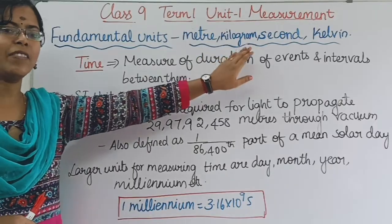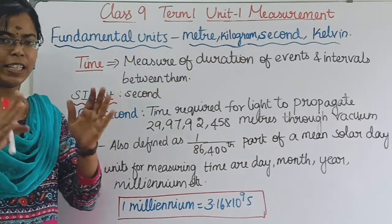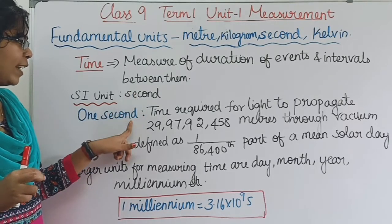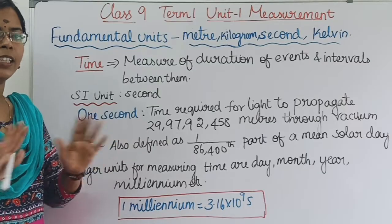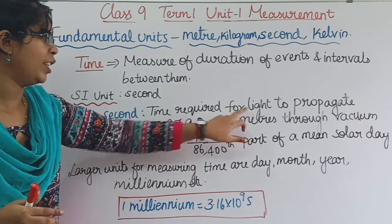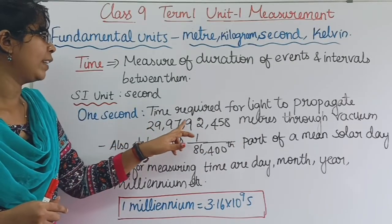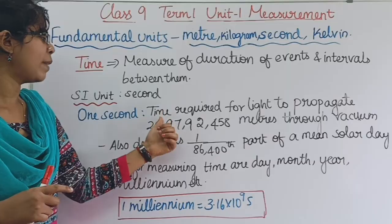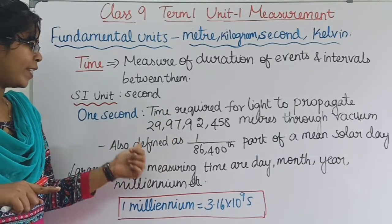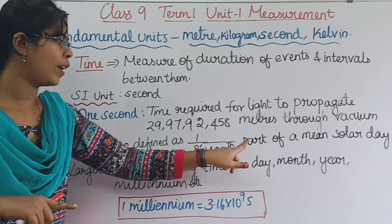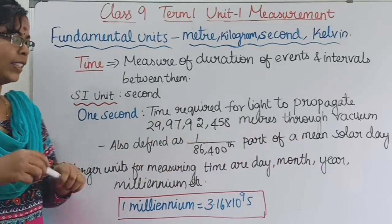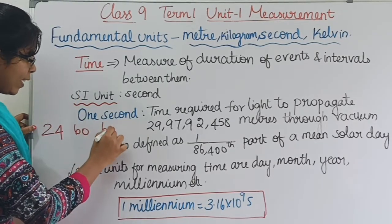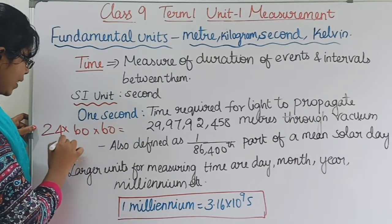The second is a unit of time. 1 second is also defined as 1/86,400 part of a mean solar day. The mean solar day: 1 day is equal to 24 hours, 1 hour is equal to 60 minutes, 1 minute is equal to 60 seconds, so 24 × 60 × 60 equals 86,400 seconds.